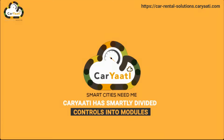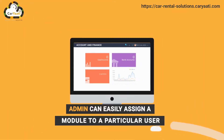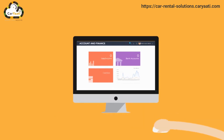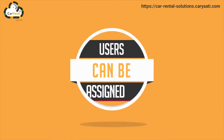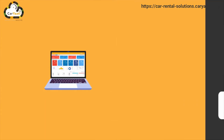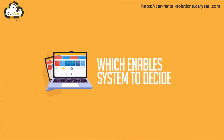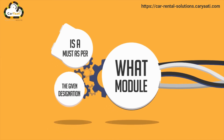Cariati has smartly divided controls into modules. The admin can easily assign a module to a particular user. Users can be assigned their roles and responsibilities as per their designation in the company, which enables the system to decide what module is a must for a given designation.